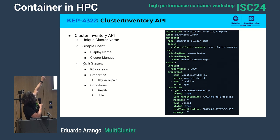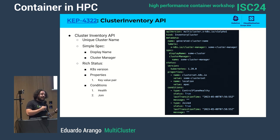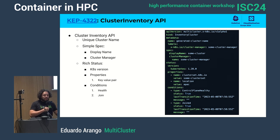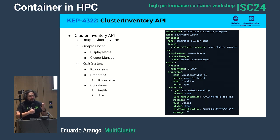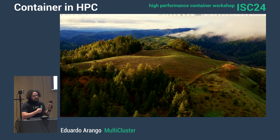Whenever you see KEP in the Kubernetes ecosystem, it basically means that it is an open PR against the Kubernetes core project to open a new feature — it's kind of like a feature request for Kubernetes. So we have a feature request, KEP 4.3.2, that is basically opening the door for this work.